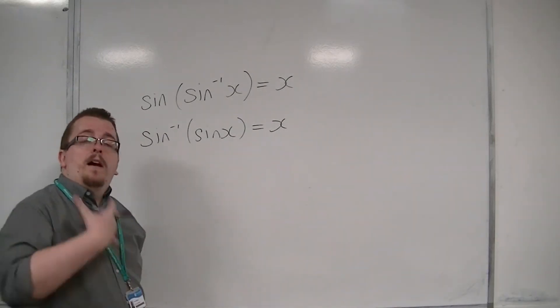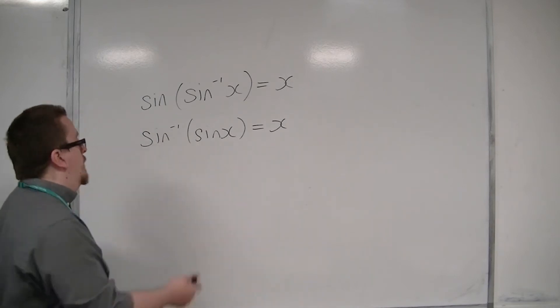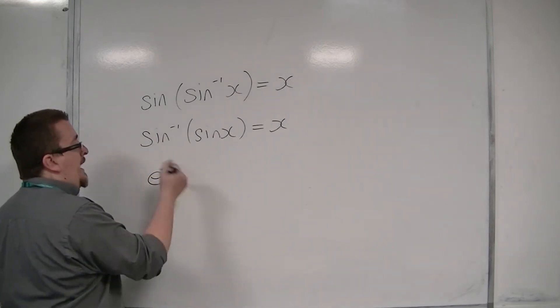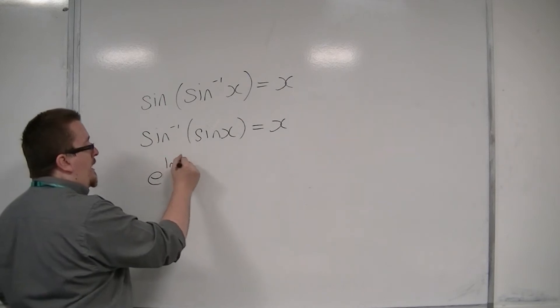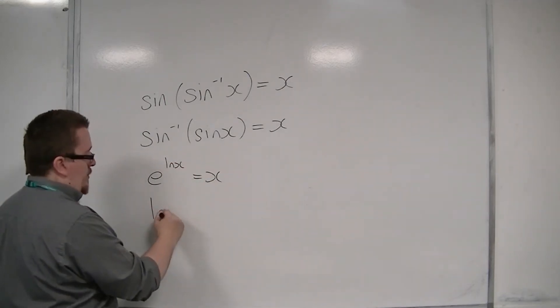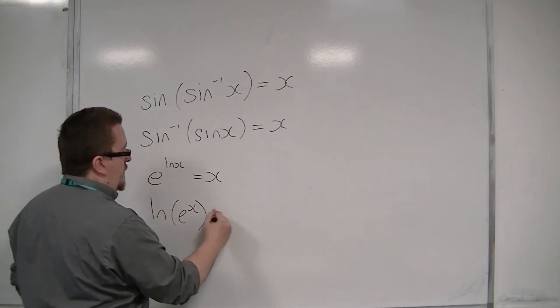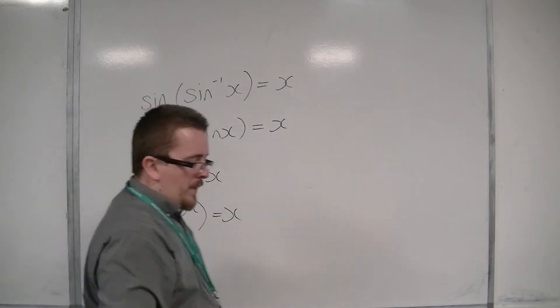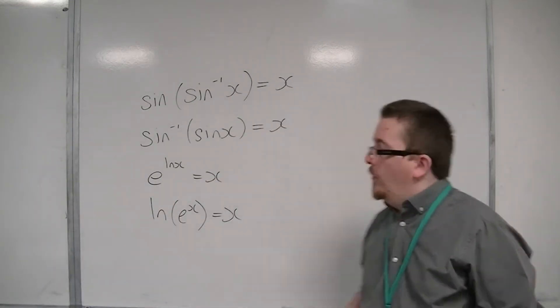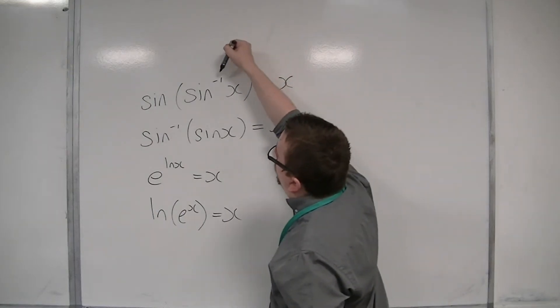And we've met inverse functions before. We've met e and log x. So e to the log x was just x, and log of e to the x was just x. And really the notation that I want to get into our heads is this minus 1 there.